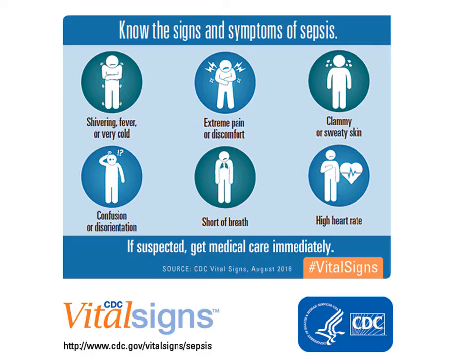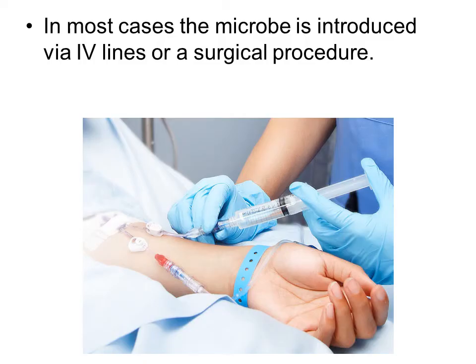These are the symptoms of sepsis: shivering, extreme pain and discomfort, clammy or sweaty skin, confusion, shortness of breath, and elevated heart rate. In most cases of septic shock or sepsis, the microbe is introduced into the blood via an IV line or a surgical procedure.